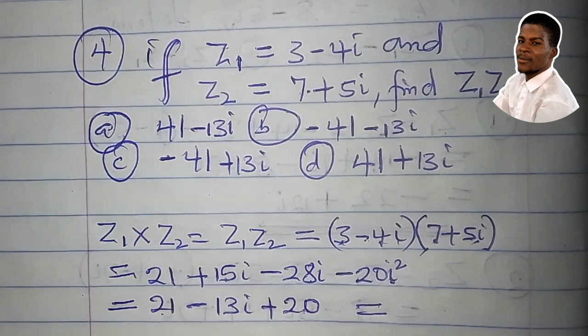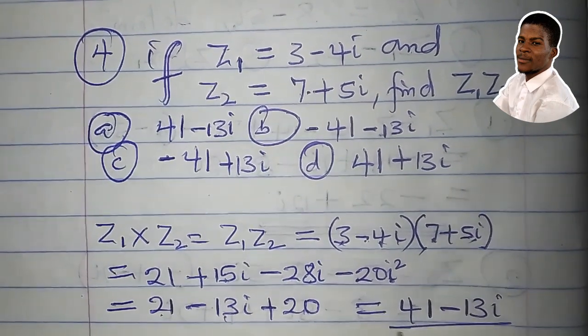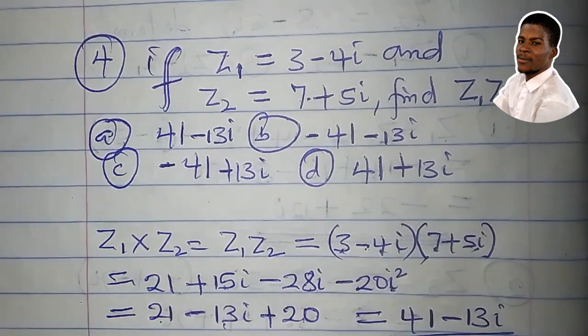21 plus 20 is 41 and minus 13i. So actually, option A is correct.